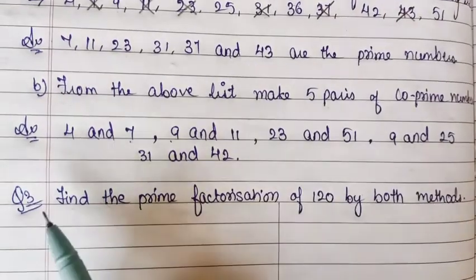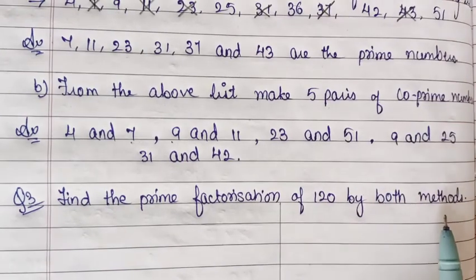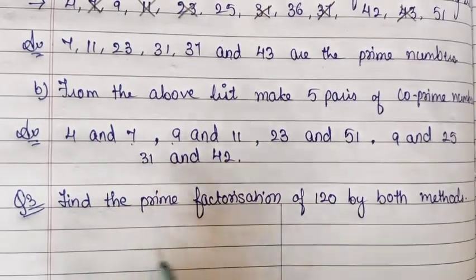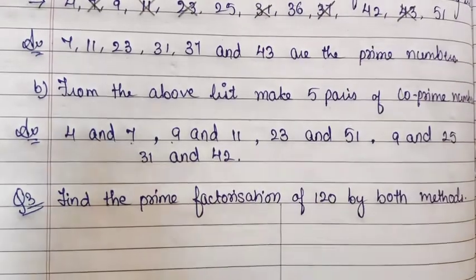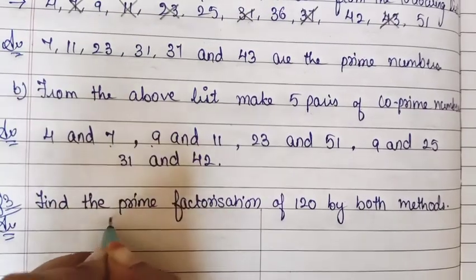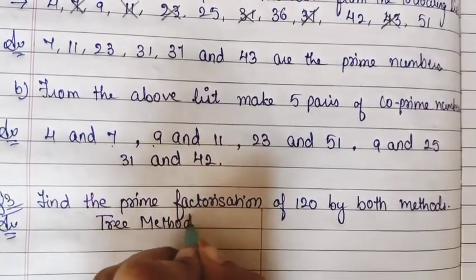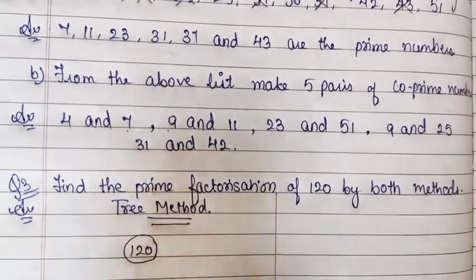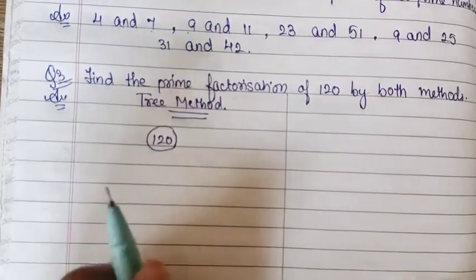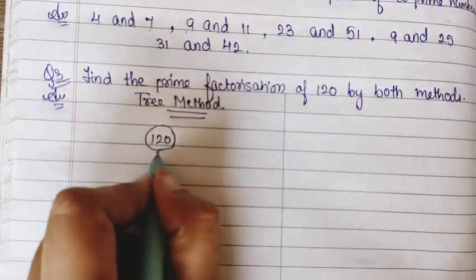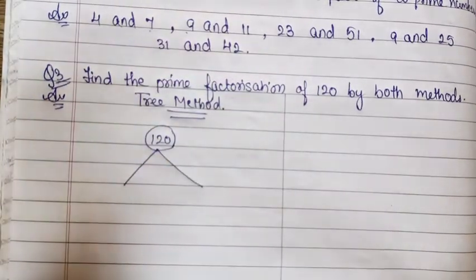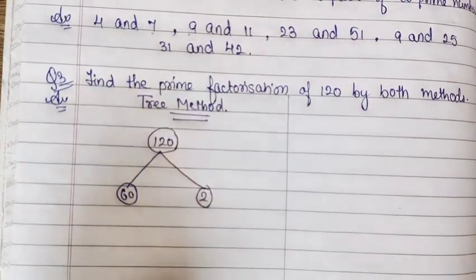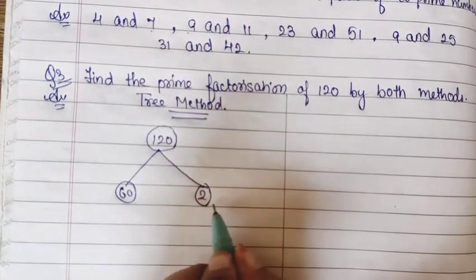Now we will go to Question number 3: Find the prime factorization of 120 by both methods. We have 2 methods — one is the factor tree method, and one is with the help of prime numbers. So first of all we will do the factor tree method. We will take 120 and make 2 branches: 60 × 2 = 120. 60 is a composite number and 2 is a prime number, so we stop at 2.